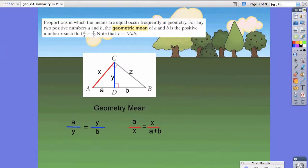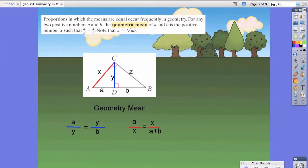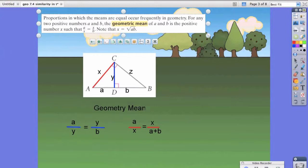So the geometric mean, as stated here, says proportions in which the means are equal occur frequently in geometry. For any two positive numbers a and b, the geometric mean of a and b is the positive number x such that a divided by x equals x divided by b.